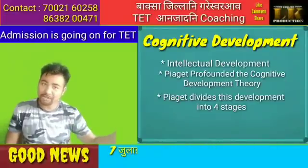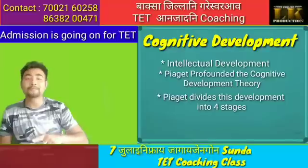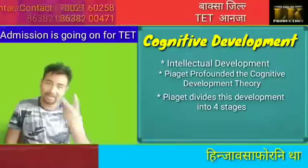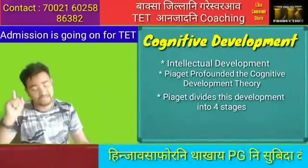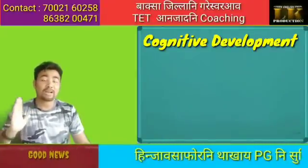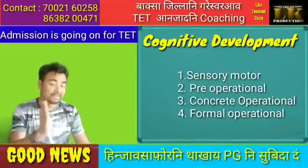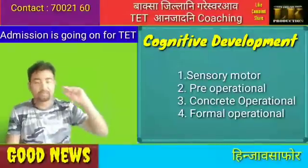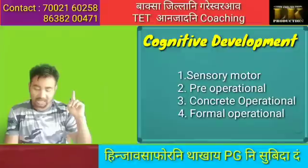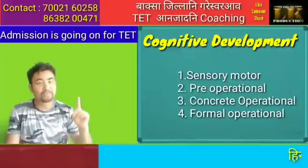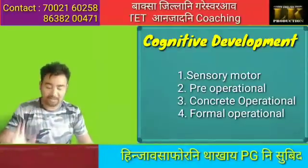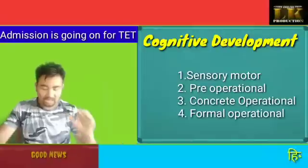Cognitive development is a very important point. The stages of cognitive development are: number 1 sensory motor, number 2 preoperational, number 3 concrete operational, and number 4 formal operational. We also have to cover emotional development.